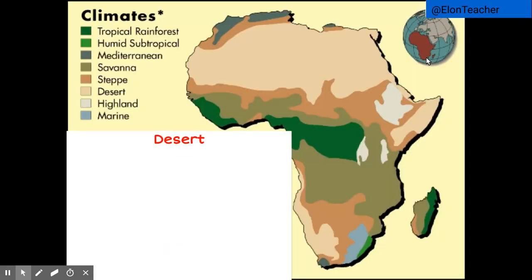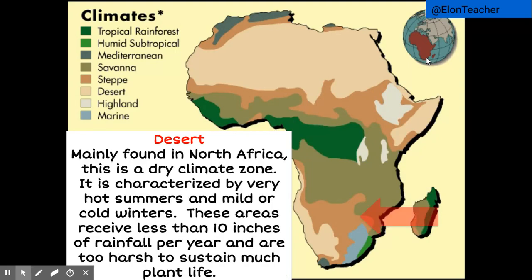First is the desert climate. You are probably familiar with this type of climate. Mainly found in North Africa, this is a dry climate zone characterized by very hot summers and mild or cold winters. These areas receive less than 10 inches of rainfall per year and are too harsh to sustain much plant life.